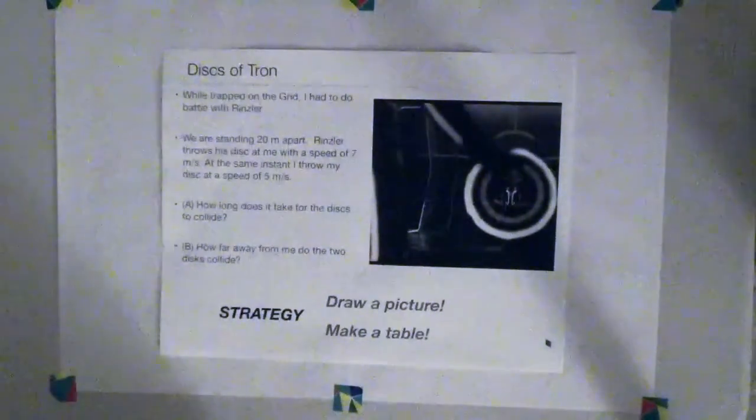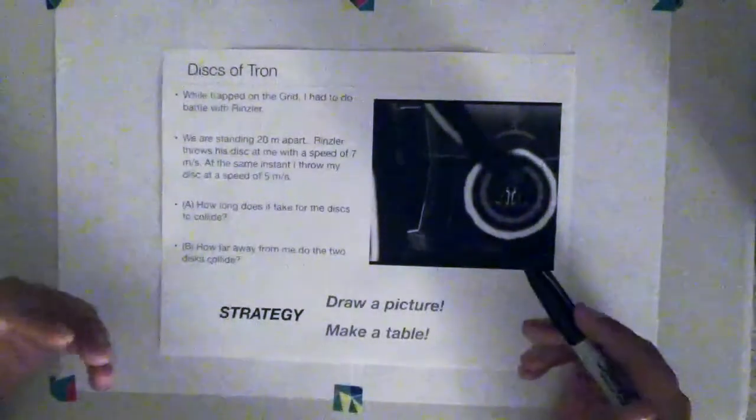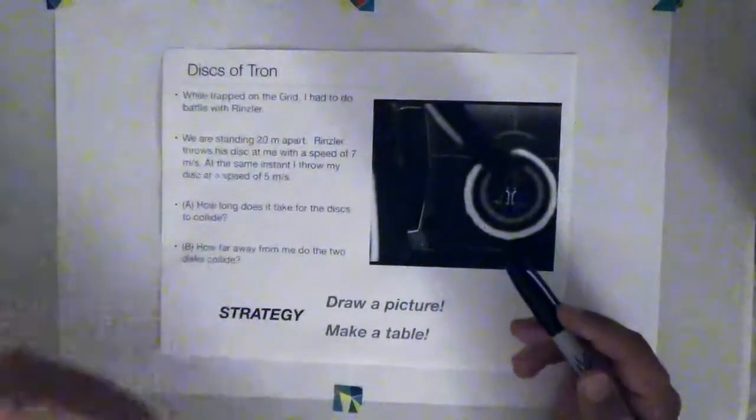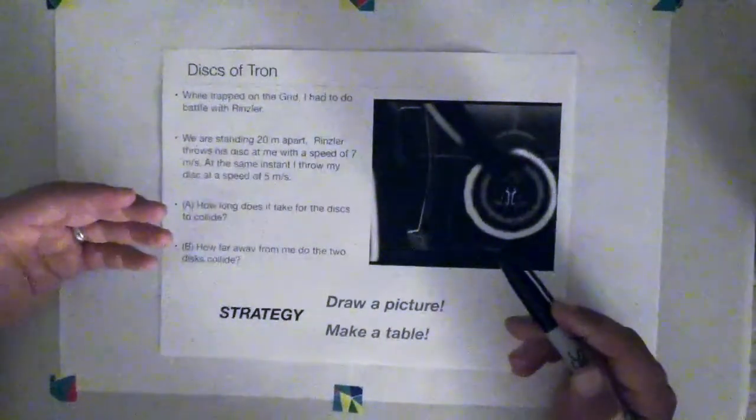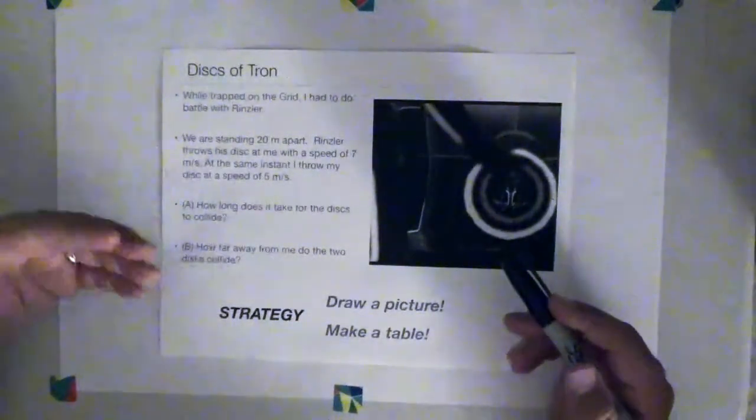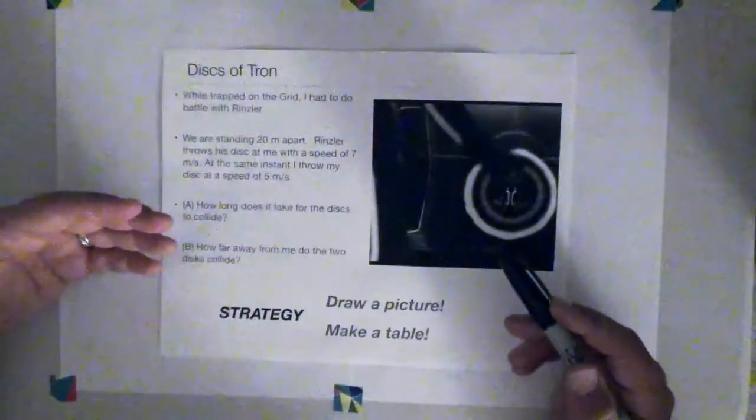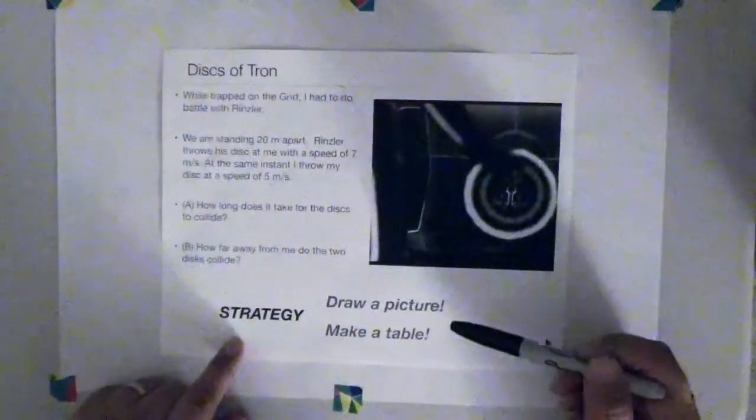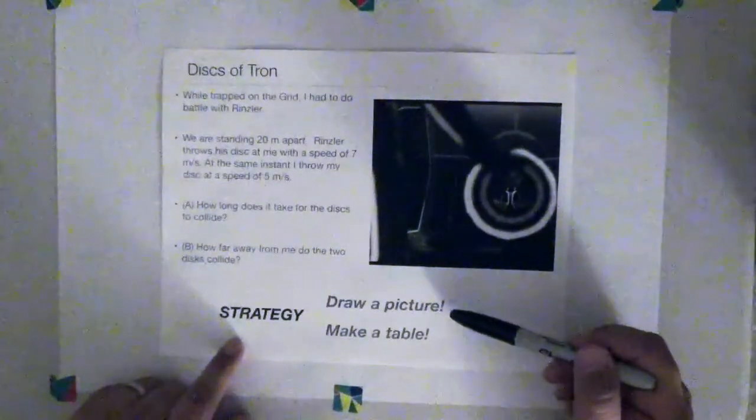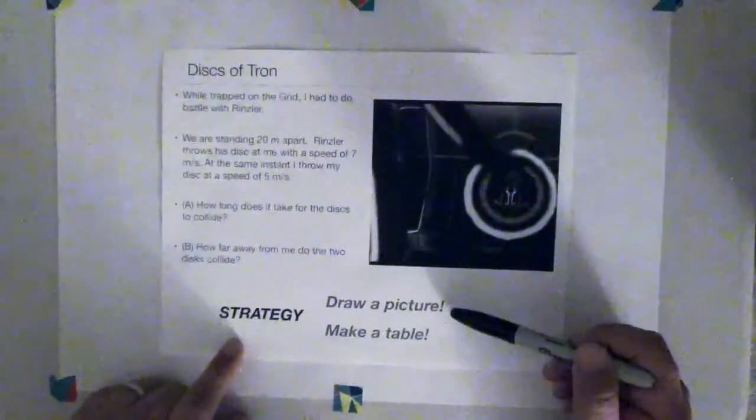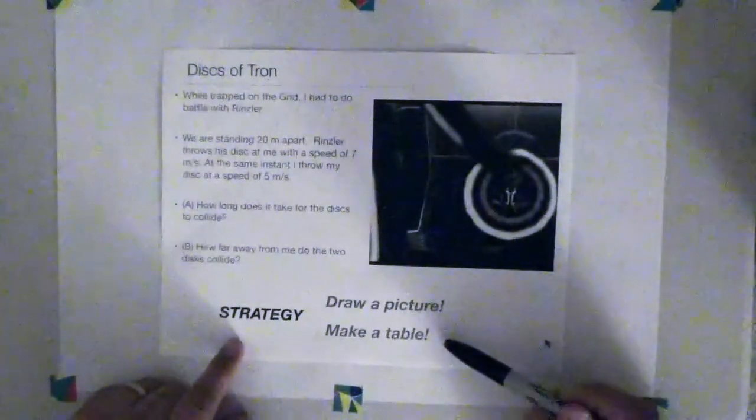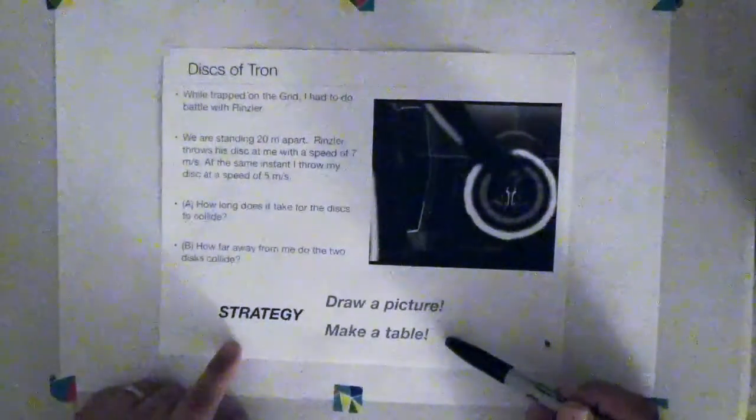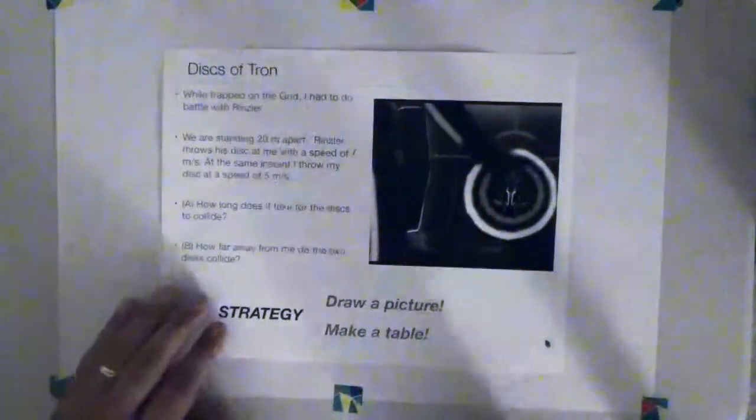Now this is very typical of the kinds of problems that you see in physics where you are given some information. But in order to solve the problem, you have to take that information and organize it. And you also have to synthesize that information and make some assumptions about how to put it together in the right way. And as we have advocated many times, good strategies that I think for doing this are always, always drawing pictures. Drawing pictures help you get everything that's going on straight in your head. And also I very strongly advocate making tables of your kinematic variables in order to keep track of all the information. So let's go ahead and solve this problem together.